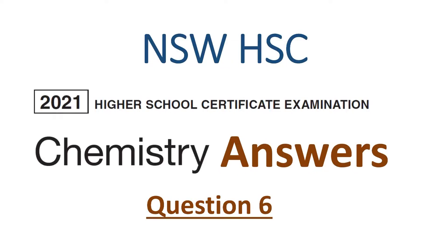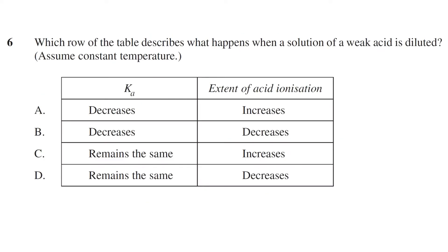In this video, we will go over the answer to question 6 of the 2021 NSW HSC Chemistry Exam. The question asks which row of the table describes what happens when a solution of a weak acid is diluted, assuming constant temperature.